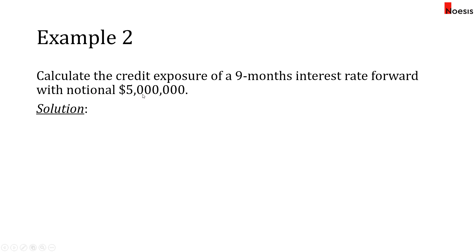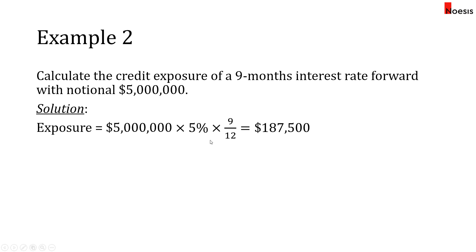Example two: calculate the credit exposure of a nine-month interest rate forward with a notional of five million dollars. For the first year, take five percent multiplied by the notional amount of five million, multiplied by the number of days to maturity over 365. Since this is nine months, use nine over twelve, giving two hundred and eighty-seven thousand five hundred dollars.